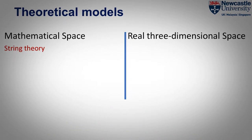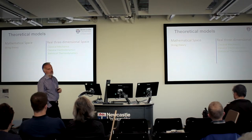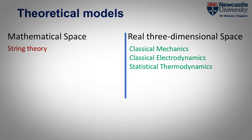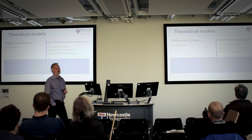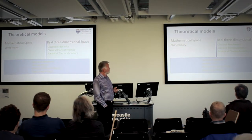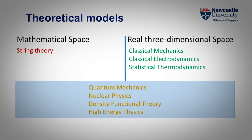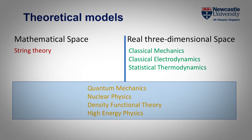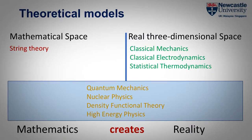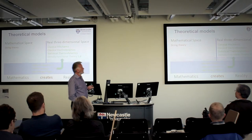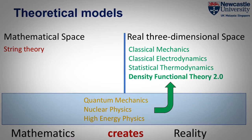Looking at theoretical models: string theory exists only in mathematical space — it doesn't even cross over into real three-dimensional space. All classical physical models exist in real three-dimensional space: classical mechanics, classical electrodynamics, and statistical thermodynamics. The problem in the 20th century was that we created theoretical models which cross over from mathematical space into real three-dimensional space. The prime example is quantum mechanics, followed by nuclear physics using the same trick. Density functional theory as originally formulated also exists partly in mathematics. What I've done in my research is move density functional theory completely into real three-dimensional space, which simplifies the problem enormously — you just need to know what's going on in your physical system.